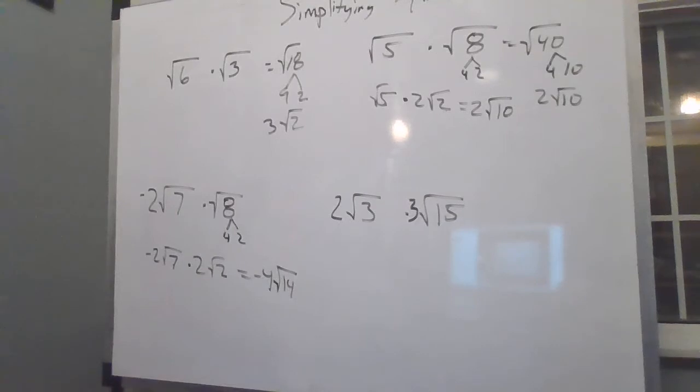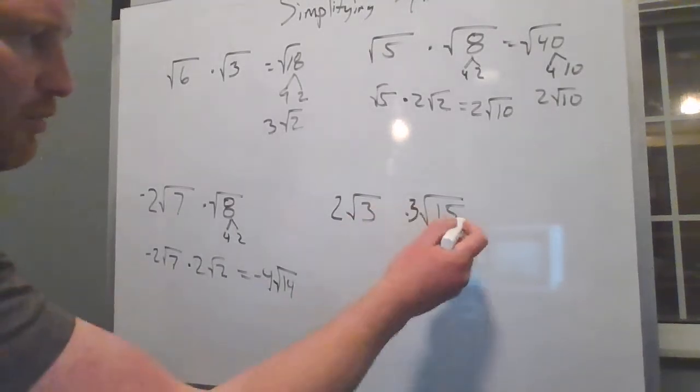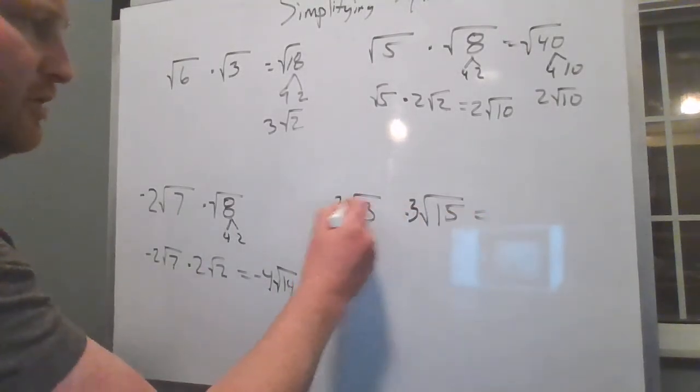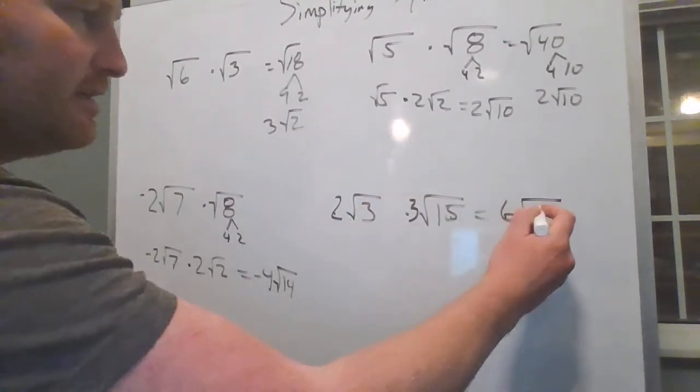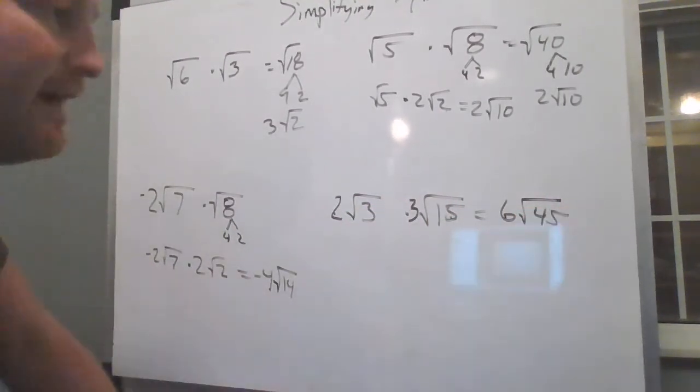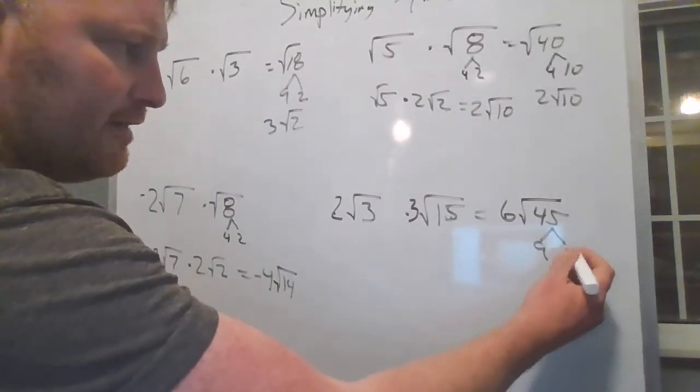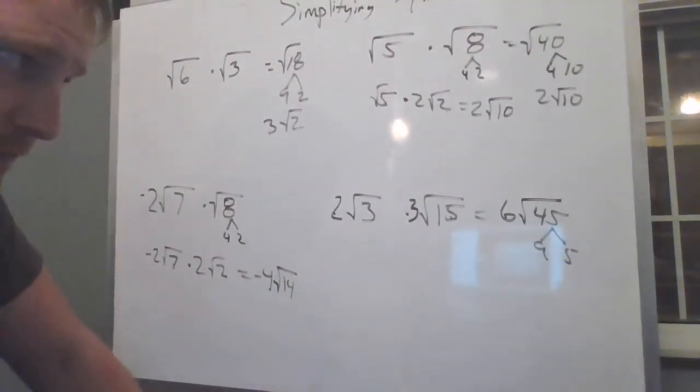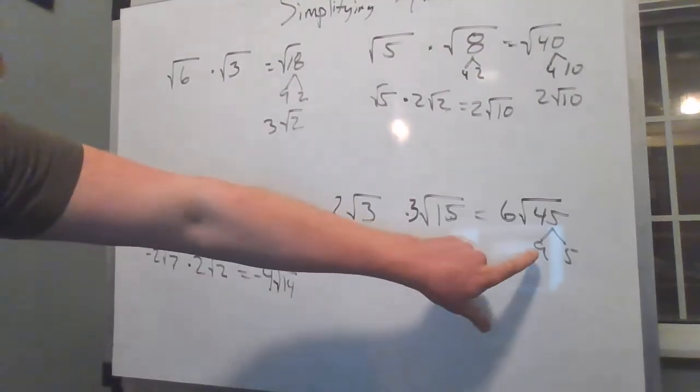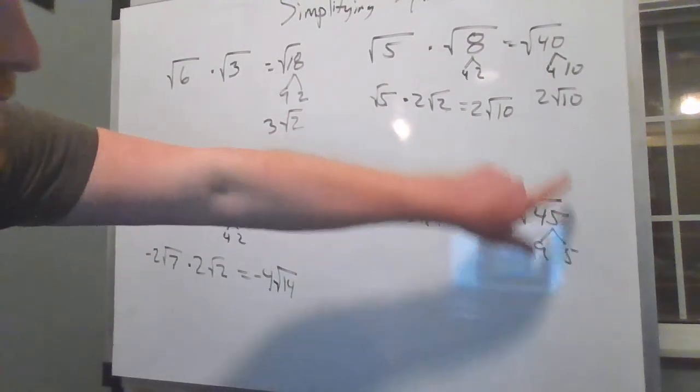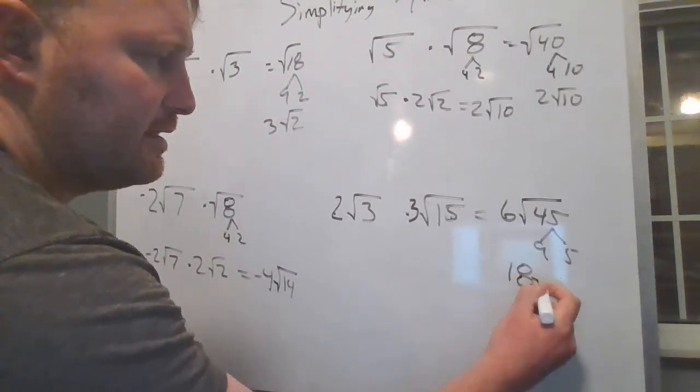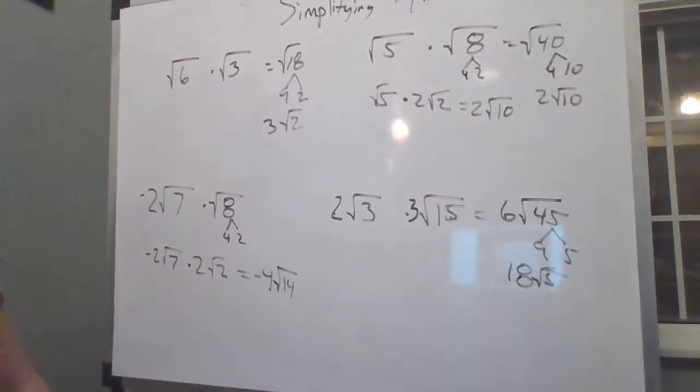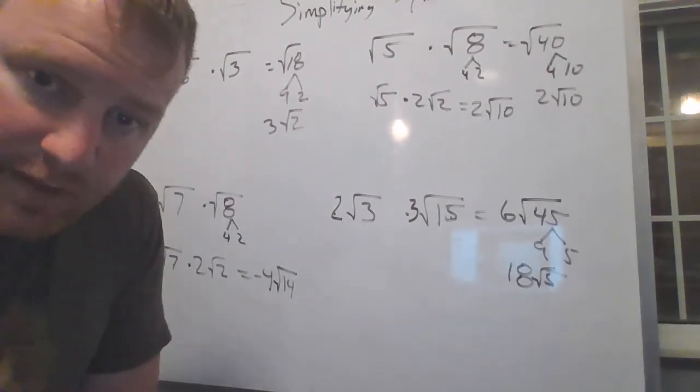Now over here, let's do this like this. These don't break down at all, so 2 times 3 is 6. Square root of 3 times 15 is 45. 45 has a 9 and a 5 inside of it. 9 divides out of 45, and that's a perfect square factor. That comes outside as a 3. 6 times 3 is 18 radical 5. Hoping that this makes sense for you guys. See you in class.